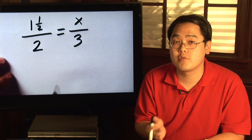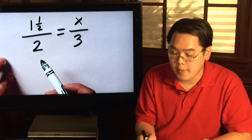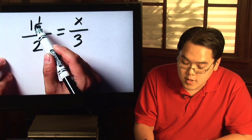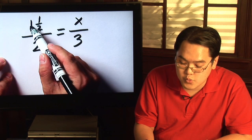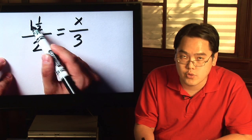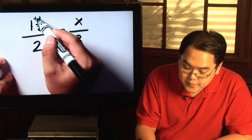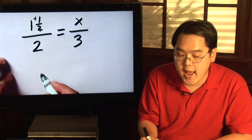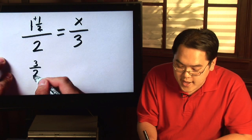So as long as you remember how to do that, you'll be good to go. Remember: take the denominator, multiply with the whole number — so two times one is two — and then you add the numerator. So one and a half is really three halves.